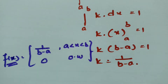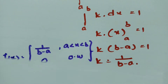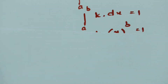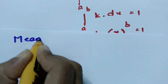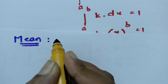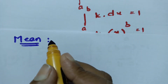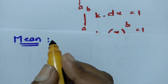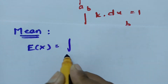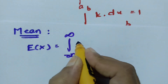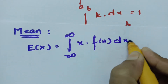Now I am going to find the mean of the uniform distribution. The formula for the mean is E(x) equals the integral from minus infinity to plus infinity of x times f(x) dx.